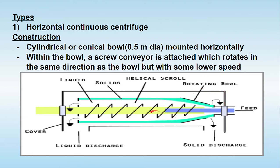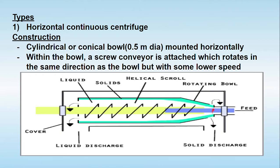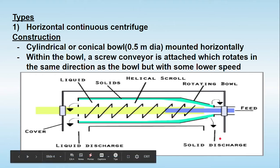Both the bowl and the screw conveyor rotate in the same direction, but the screw conveyor rotates at a slightly lower speed than the non-perforated bowl. The material to be separated is inserted inside; solids are deposited and carried by the screw conveyor and discharged at one end, while the liquid is discharged from the other end.